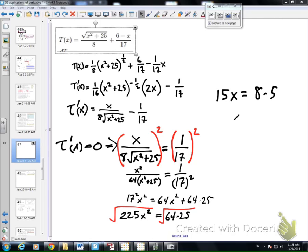So if I take the square root of both sides and solve for x, I get 8/3, and that's where I should be landing on the shore. In other words,